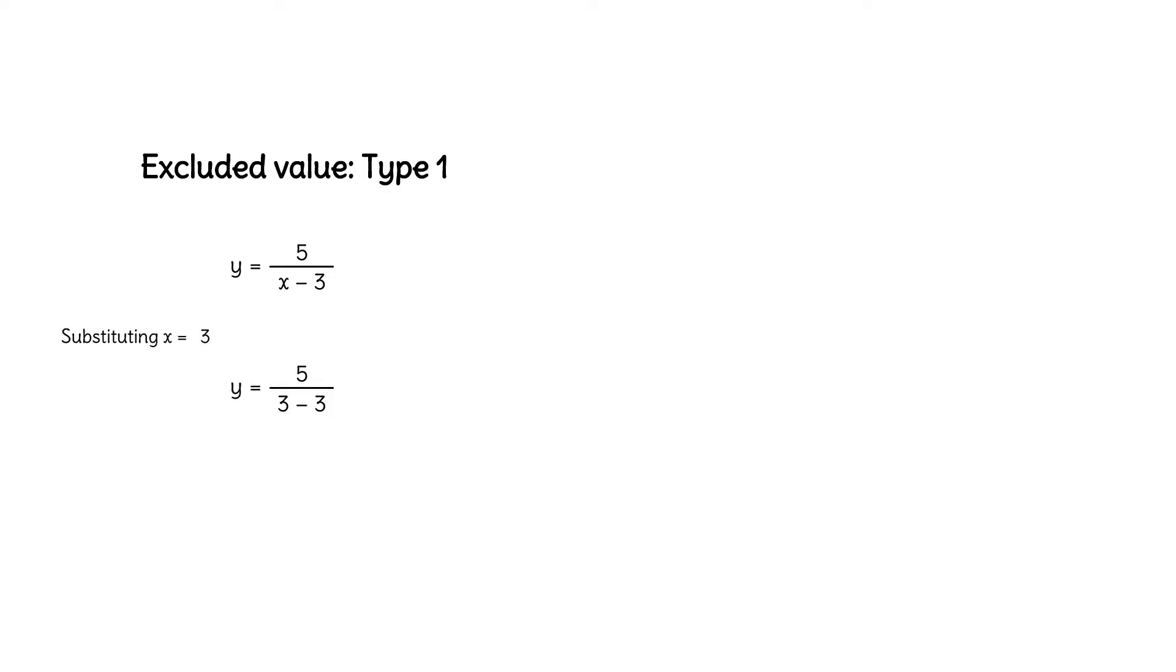If we substitute 3 for x, we get 3 minus 3 in the denominator, which is 0. What's 5 over 0? That's undefined. We can't substitute 3 for x in this function and get a defined result. So 3 is the excluded value. The reason is that an x of 3 results in division by 0.